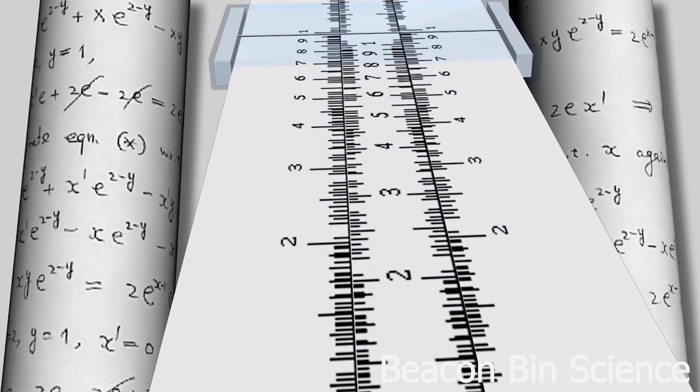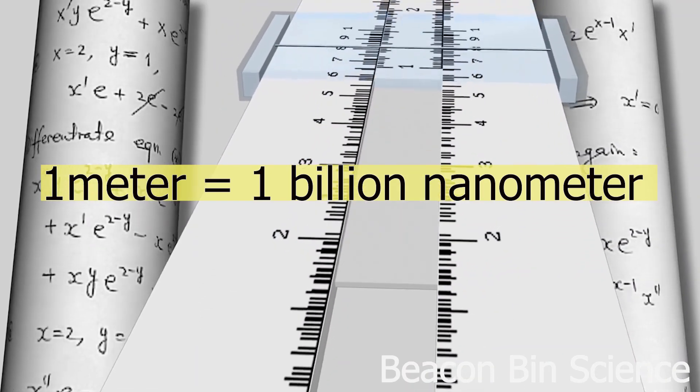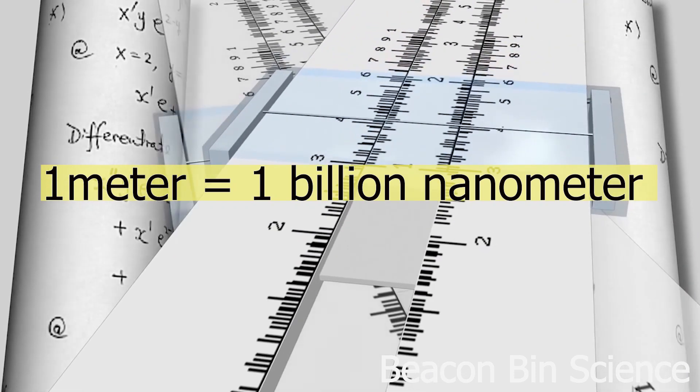Nanometer is a unit of size which is a billionth of a meter. So if I have to demonstrate you how small nanometer is then I would prefer to take an example of newspaper.